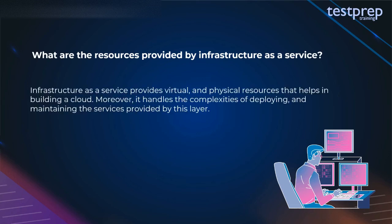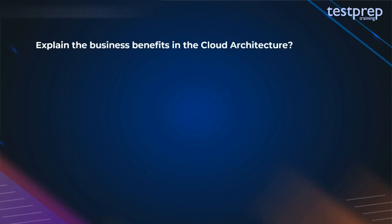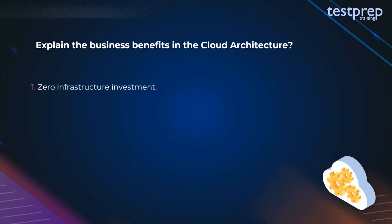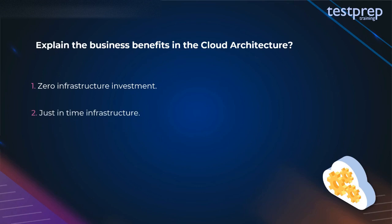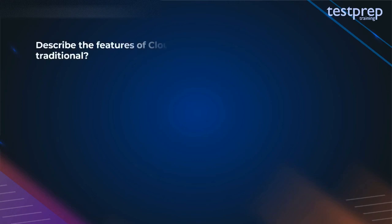Question 39: What are the resources provided by Infrastructure as a Service? IaaS provides virtual and physical resources that help in building a cloud. It handles the complexities of deploying and maintaining the services provided by this layer. Question 40: Explain the business benefits in cloud architecture. The benefits include: first, zero infrastructure investment; second, just-in-time infrastructure; third, more efficient resource utilization.